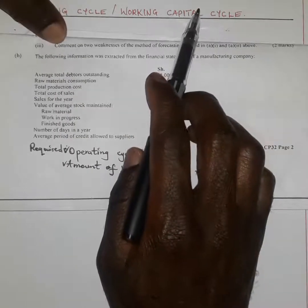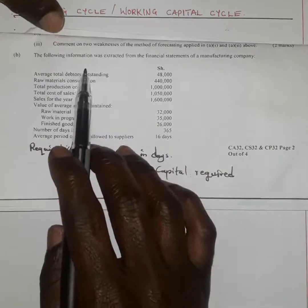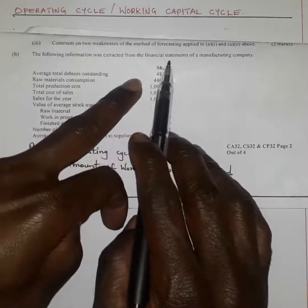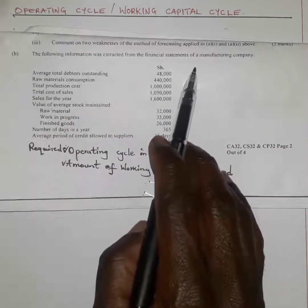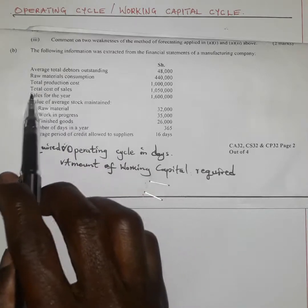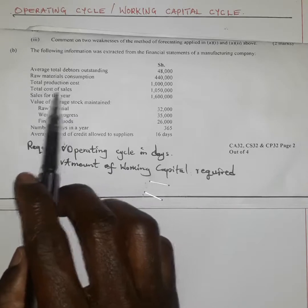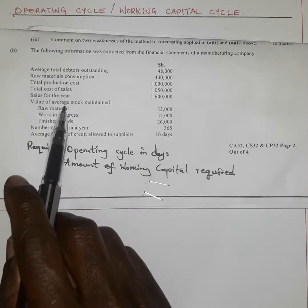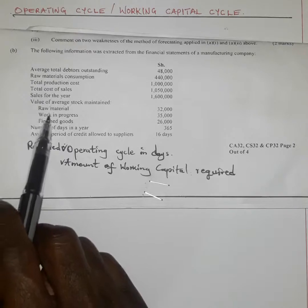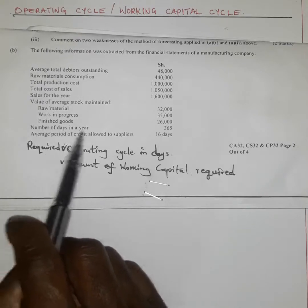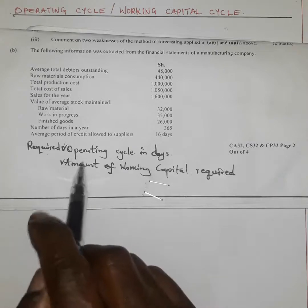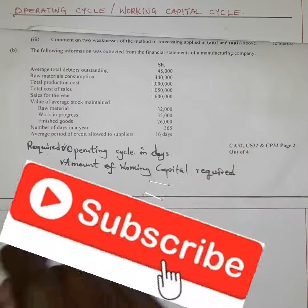We have a piece of information relating to a manufacturing company. From the financial statements given, we can tell that the average total debtors outstanding is given, we have raw materials consumed, total production cost, total cost of sales, sales for the year, the value of average stock maintained — covering three types: raw materials, work in progress, and finished goods — plus the number of days in a year and the average period of credit allowed to suppliers.